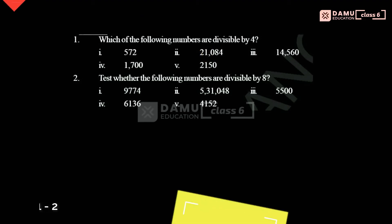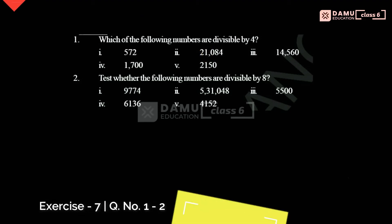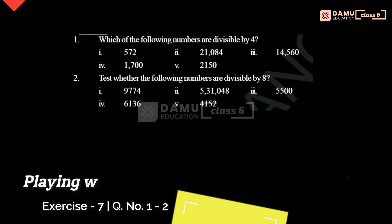Hello viewers, thank you for watching our videos. If not yet subscribed, please subscribe and click the like button. So in this module, we are going to discuss which of the following numbers are divisible by 4. The divisibility rule for 4 is: the last two digits should be divisible by 4, then the given number is divisible by 4.